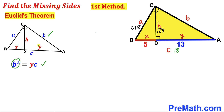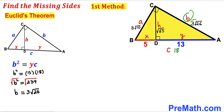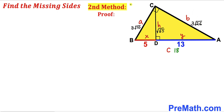Here's Euclid's third theorem: b squared equals the product of segment y times the whole side length c. In our case y is 13 and c is 18, so b squared equals 13 times 18, giving us b squared equals 234. Taking the square root on both sides, our lowercase b value turns out to be 3 times the square root of 26.